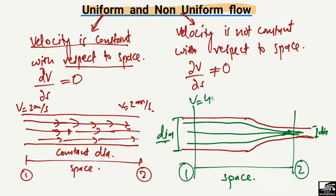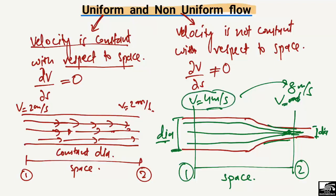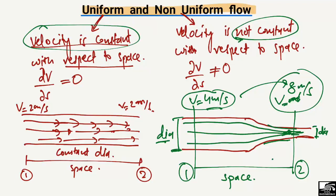For example, where the pipe has a high diameter, the velocity might be 4 meters per second. But where the diameter is smaller, the velocity increases — for example, to 8 meters per second. So the velocity changes from 4 to 8 meters per second because of the change in pipe diameter. In contrast, in uniform flow, the velocity remained constant at 2 meters per second throughout.